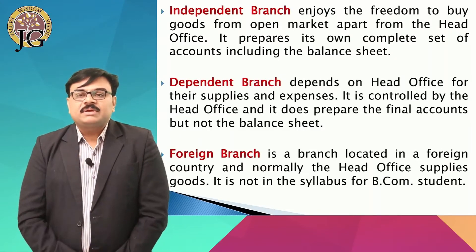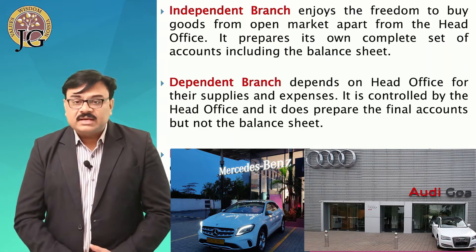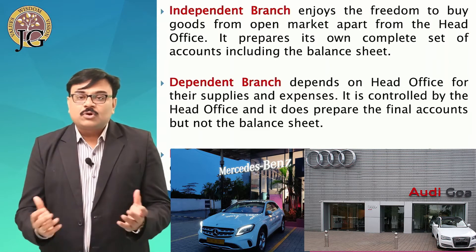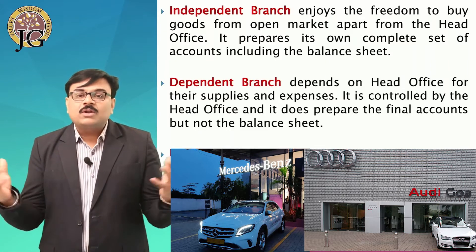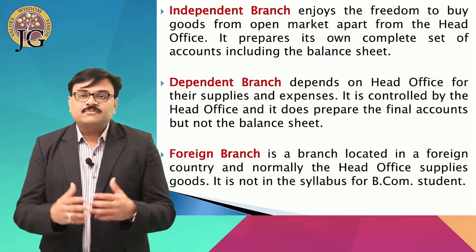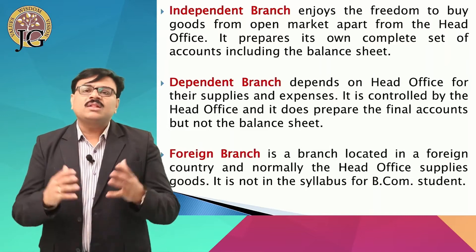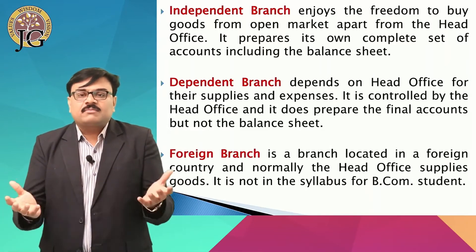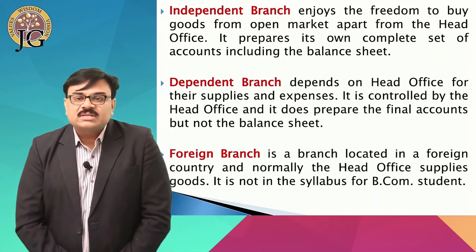A dependent branch is a branch that depends on its head office. For example, Mercedes, BMW, and Audi have products which are sold universally all across the globe, so they depend on the headquarter and their main office for the supply of goods and services. A foreign branch is when a company has a branch located abroad.